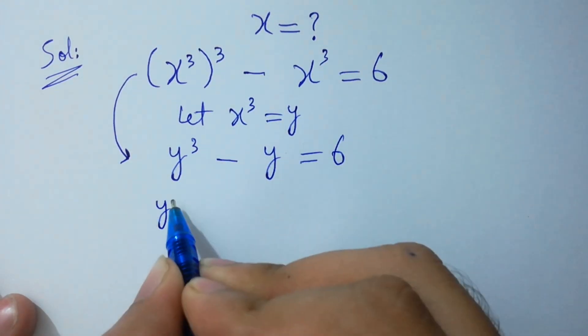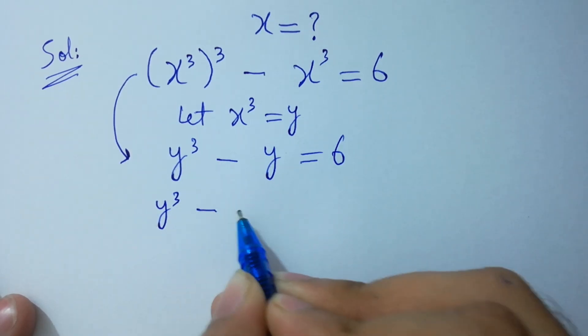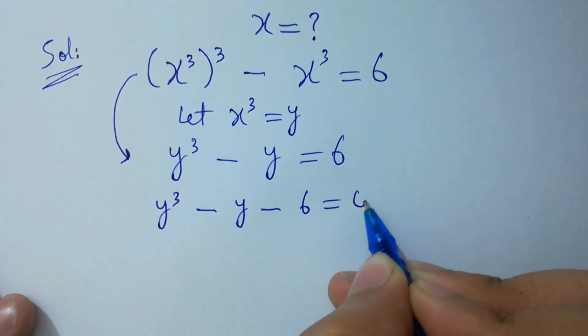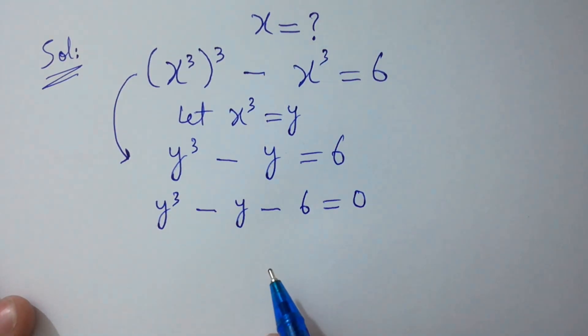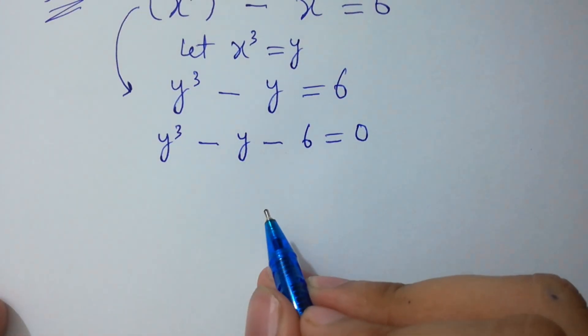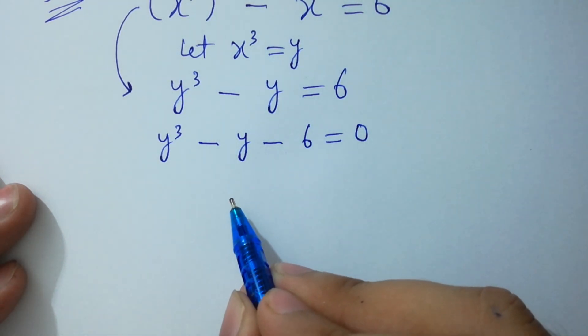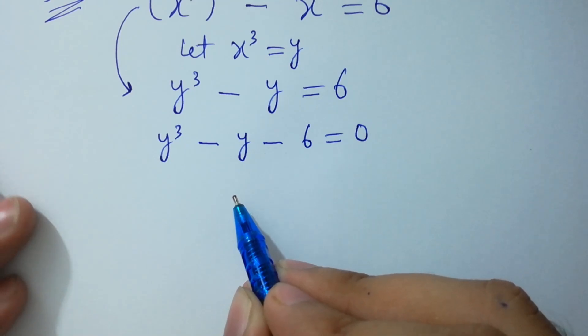It will be equal to y cube minus y minus 6 equal to 0, which is a cubic equation. We have to convert this equation into a quadratic equation to solve faster.